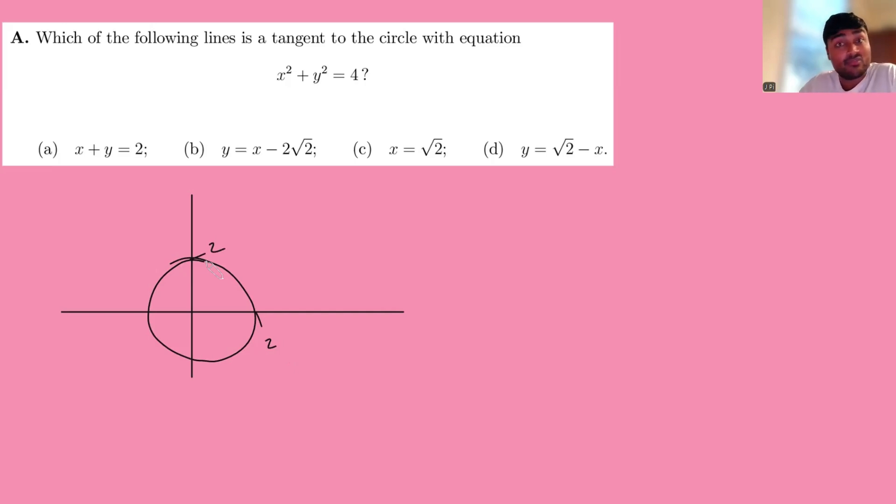And we've been given four options here. And we can actually just do this via elimination. Let's look at the first one. The first one is the line x plus y equals 2. That's the straight line going through those two points there. Clearly not a tangent. I'll eliminate that.